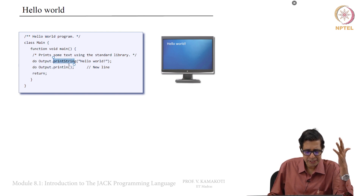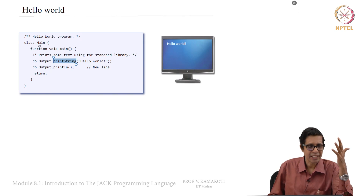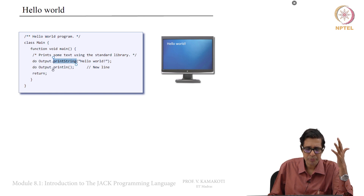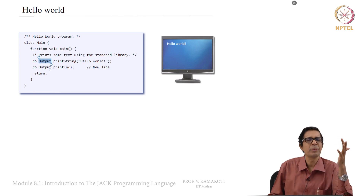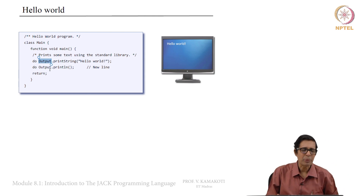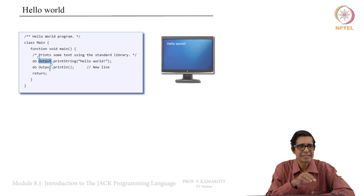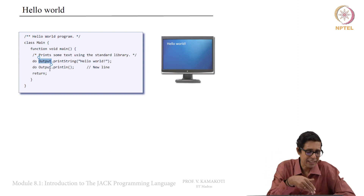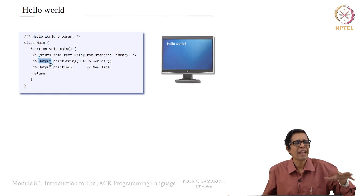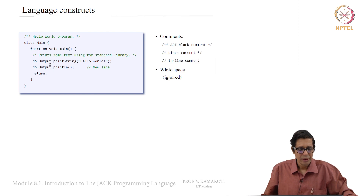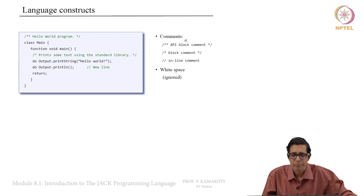The Output class — which provides printString and println — is provided by the operating system, just like printf and scanf are provided by the operating system in C programming. Output is a class, printString is a function inside that class, and similarly Output dot println. So who provides this Output class with all its functions? The operating system provides it. This is an understanding of the Hello World program.